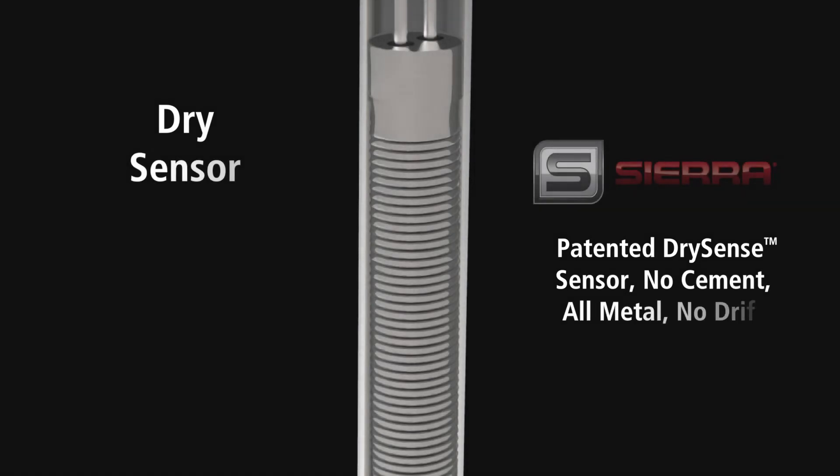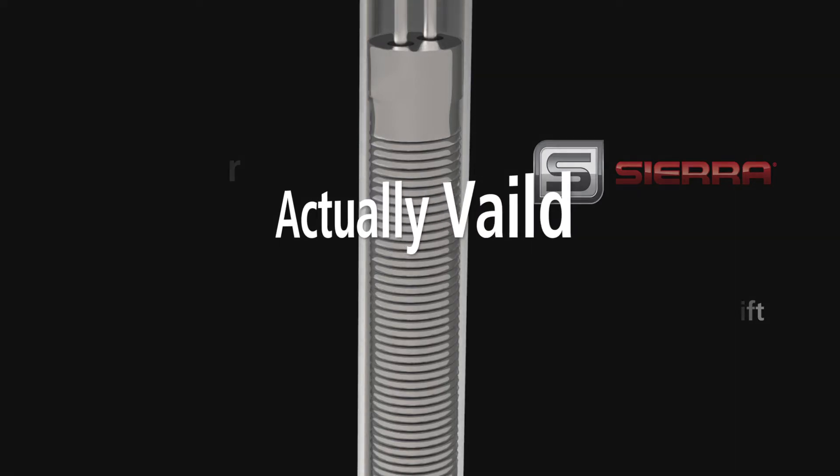Sierra's DrySense All-Metal No-Drift sensor has a big advantage during in-situ calibration validation. With Sierra's All-Metal DrySense Velocity sensor, you have the mechanical design confidence that there will be no drift and that in-situ calibration validation is indeed actually valid.